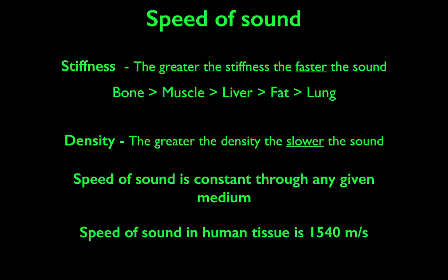The sound wave has the same velocity or speed through a tissue at all times. In the human body, it's pretty fast at 1,540 meters per second on average. There are certain tissues that it travels through faster, and that is based off of stiffness and density. Stiffness refers to how bone is more stiff than lung. Density also affects the rate at which the sound wave travels through the human body, so this will be affected differently in different tissues. However, the average is still 1,540 meters per second.